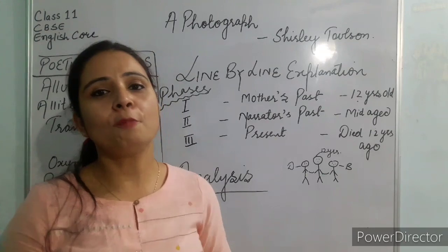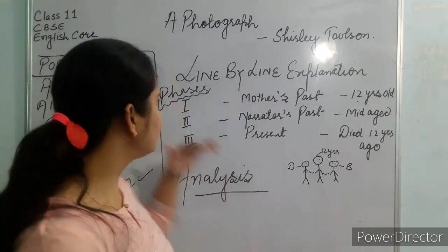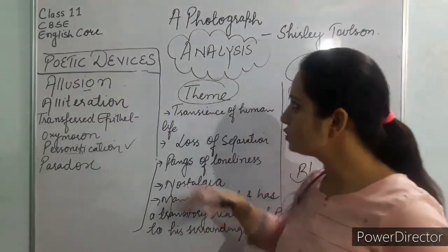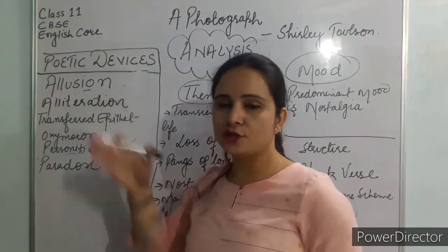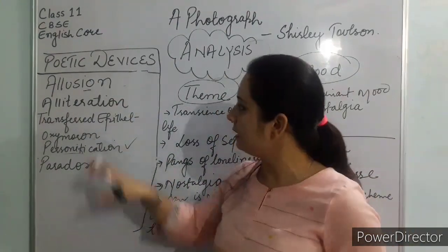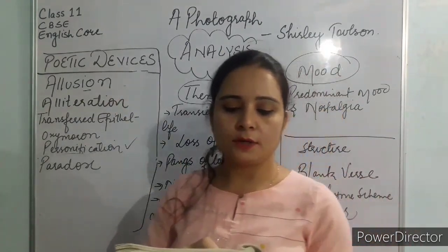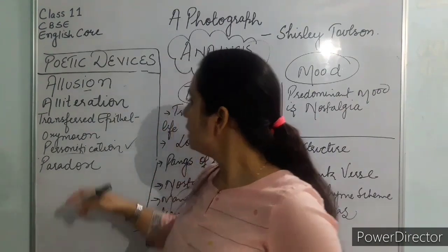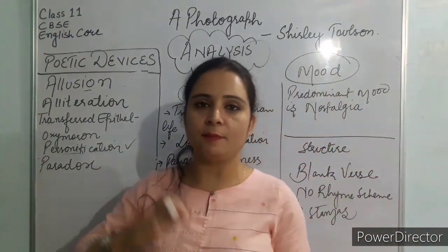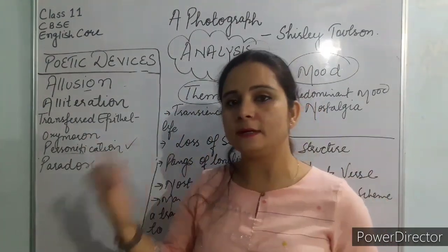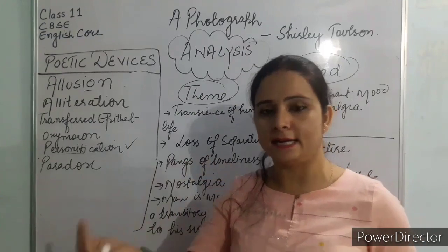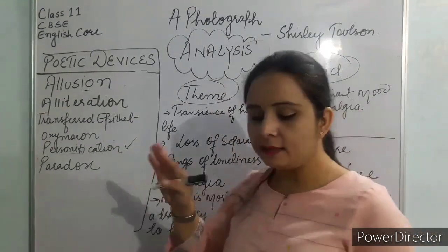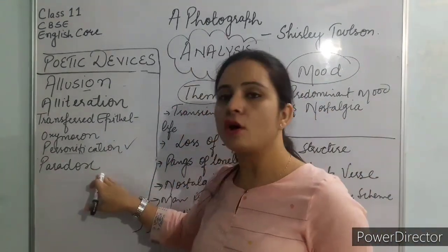The poem raises uncomfortable questions about our own journeys of forced losing and accepting the consequent void in our lives. The poetic devices include: allusion (cardboard), alliteration ('stood still,' 'silence silences'), transferred epithet ('terribly transient feet'), oxymoron ('labored ease'), and personification ('silence silences'). 'Its silence silences' is also a paradox — a contradictory statement, as silence itself is without voice, yet it is said to silence the poet.